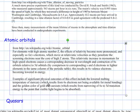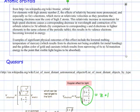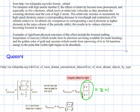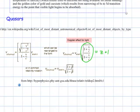And it says here, this is something I just learned. Examples of significant physical outcomes of this effect include the lowered melting temperature of mercury, making it liquid at a lower temperature, which results from 6s electrons not being available for metal bonding, and the golden color of gold and cesium, which results from narrowing of 6s to 5d transition energy to the point that visible light begins to be absorbed. If you have taken chemistry, then you know what these 6s, 5d, 1s orbitals mean.